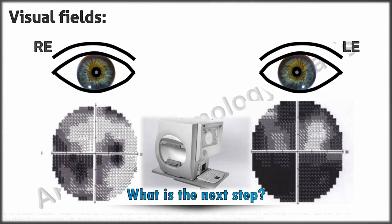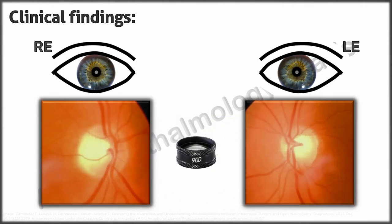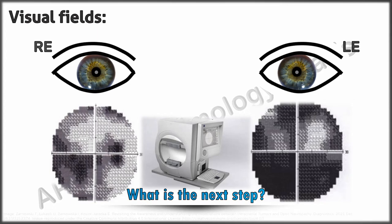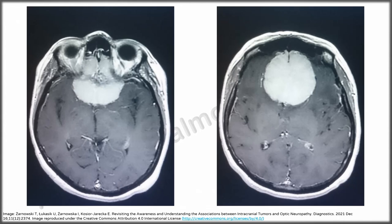The fields, especially in the left eye, show advanced changes that do not match the disc appearance. Looking closely, there is pallor but no disc excavation — characteristic of glaucomatous cupping. There is no selective vertical elongation, notching, parapapillary atrophy, or RNFL defects. Could this be a misdiagnosed case of NTG? Whenever one sees an atypical disc appearance or a field that does not match the optic disc, neuroimaging is the next step. MRI scans showed evidence of an olfactory groove meningioma, which was removed via craniotomy, and her visual fields improved partially.